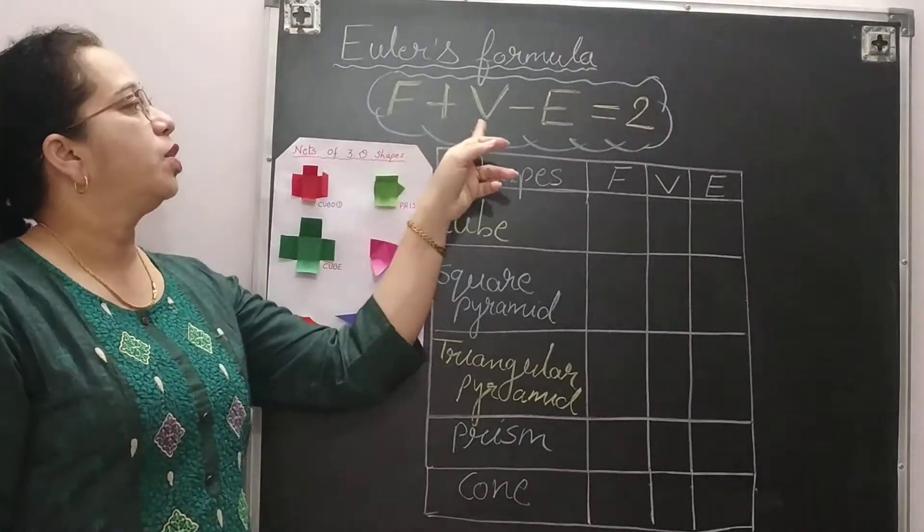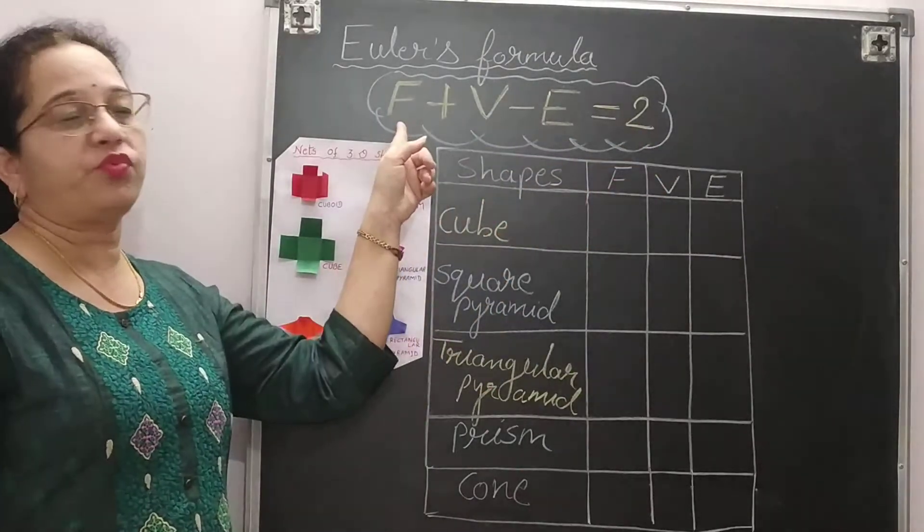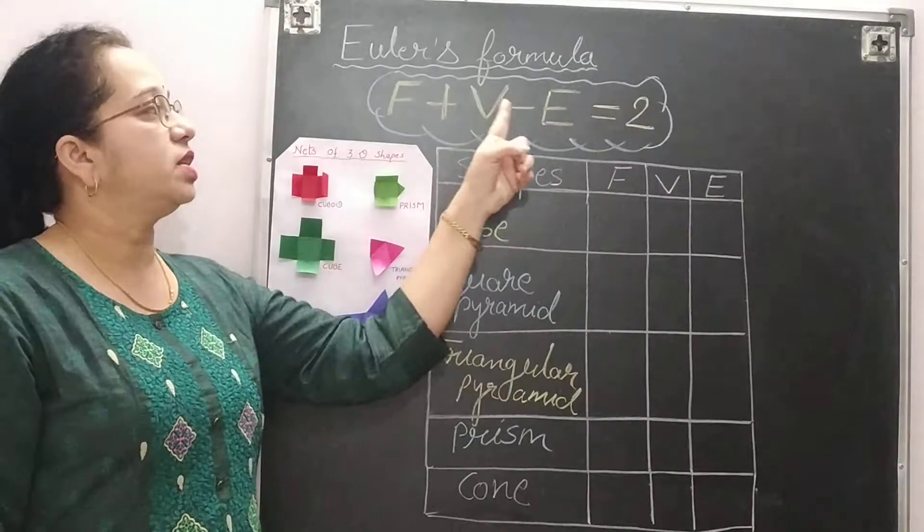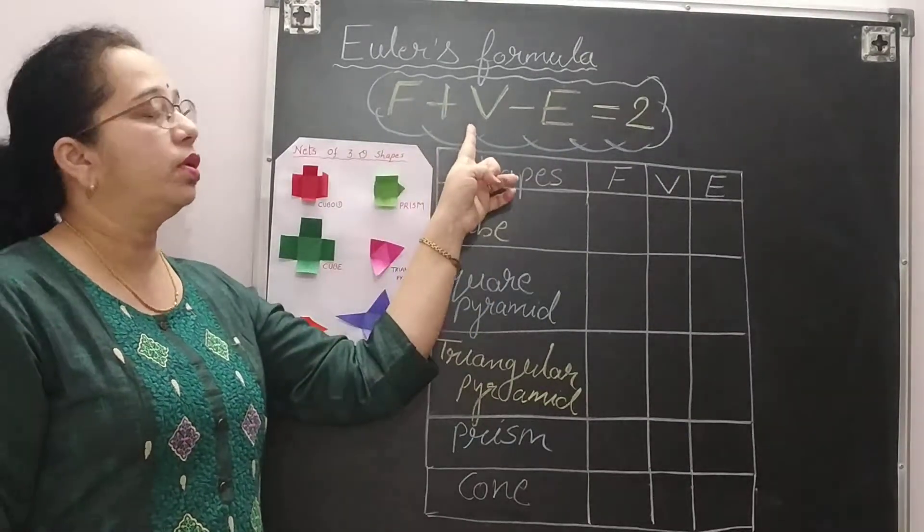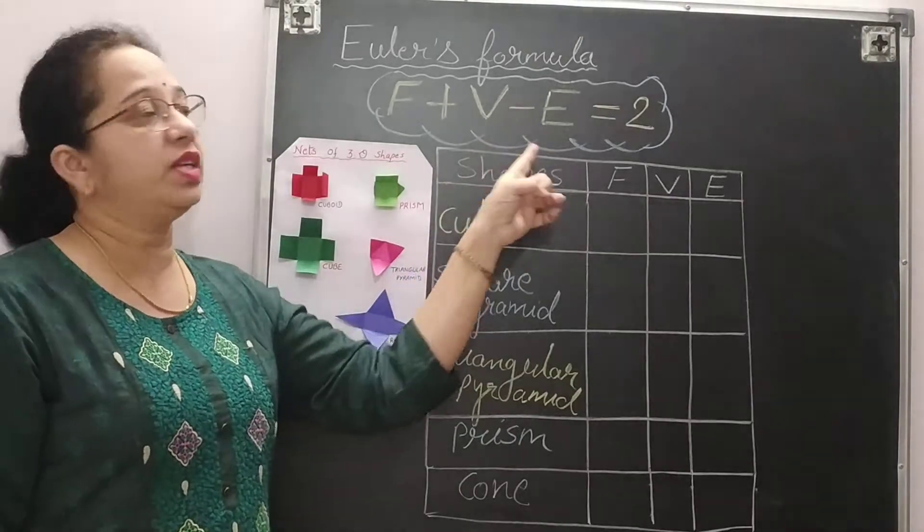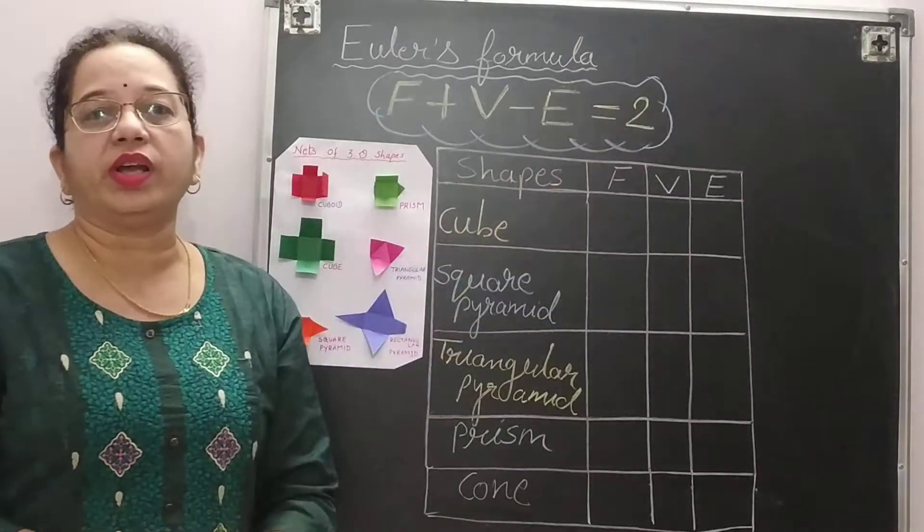F plus V minus E is equal to 2. F denotes faces, V denotes vertices and E denotes edges. If we count number of faces, number of vertices, number of edges, and substitute in the formula, your answer is always 2.